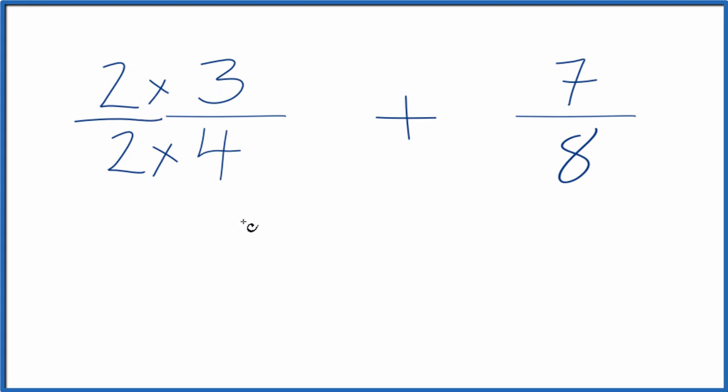Because now, two times three is six. Two times four is eight. We have eight. We have that denominator that's the same. So we'll add seven-eighths here.